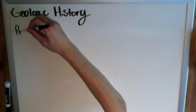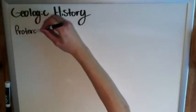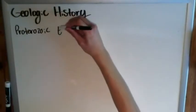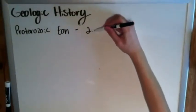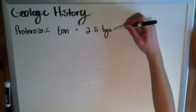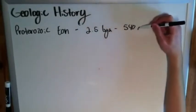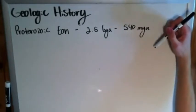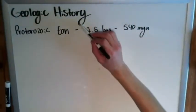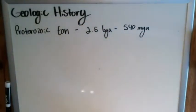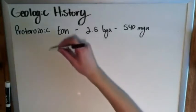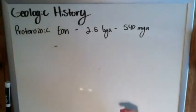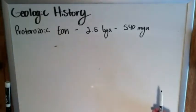Next up, we have the Proterozoic Eon. Once again, it is an eon, which tells you how long it is relatively. It stretches for a very long time — around 2.5 billion years ago to 540 million years ago — which lets you know that not a whole lot is happening in terms of life, geologic activity, and stuff like that.